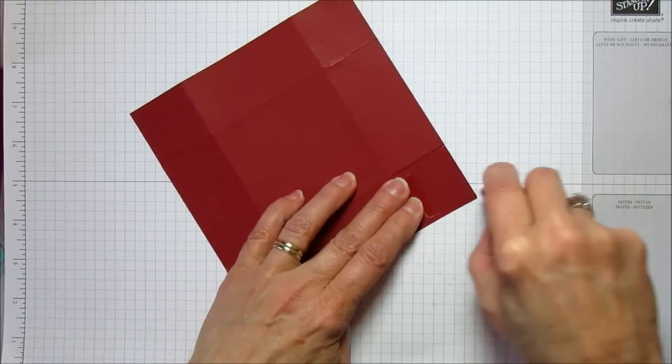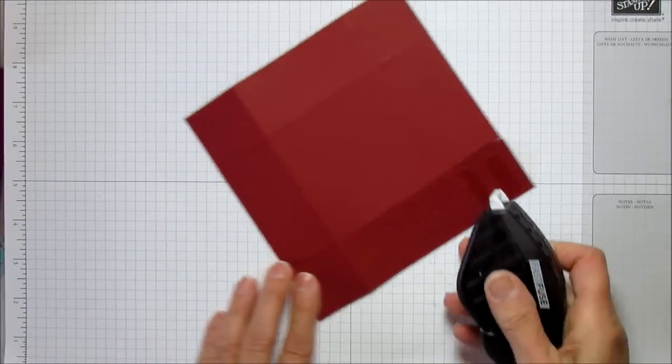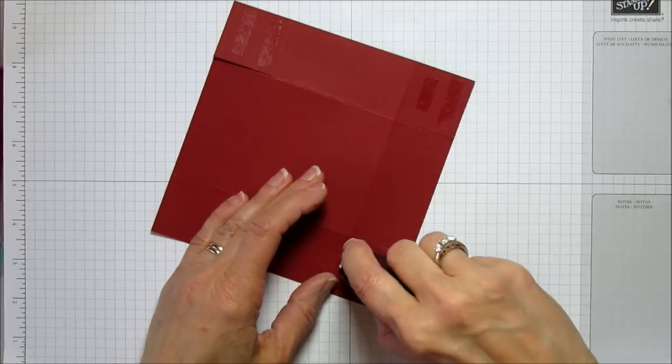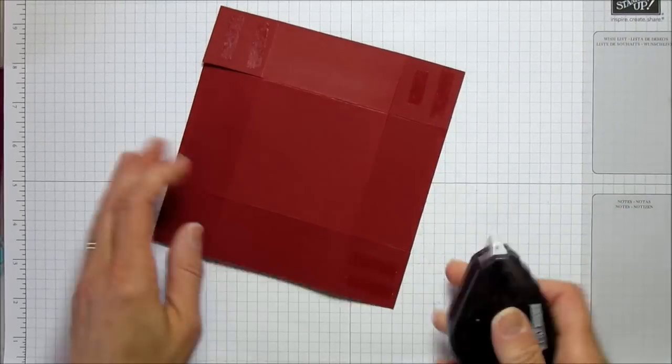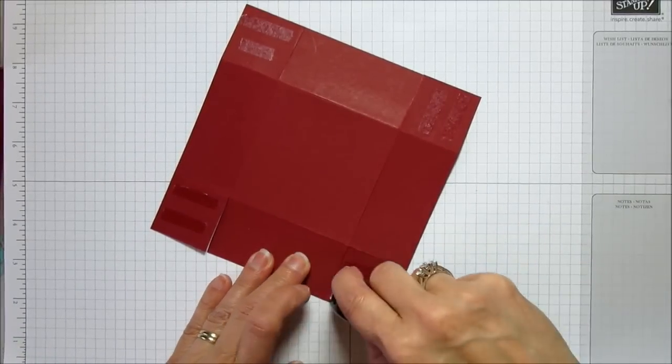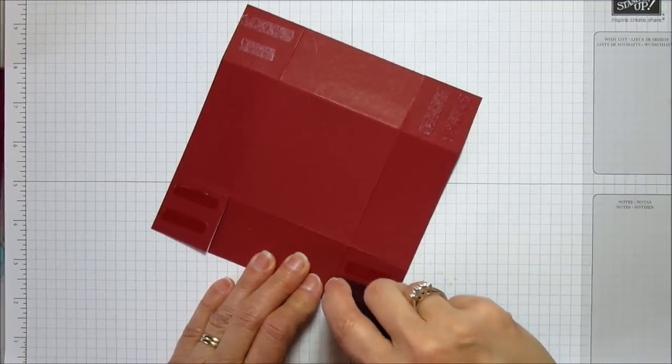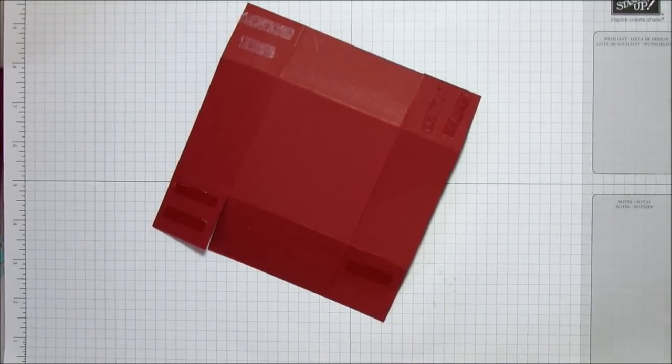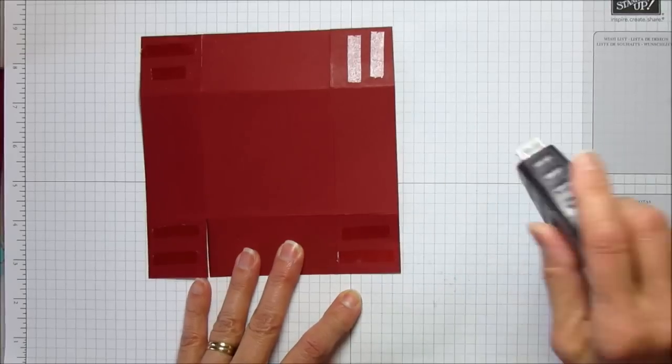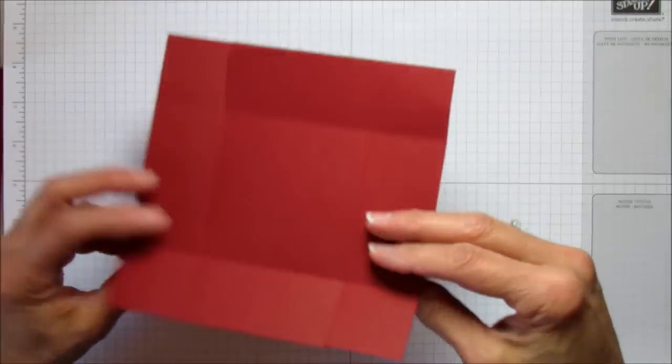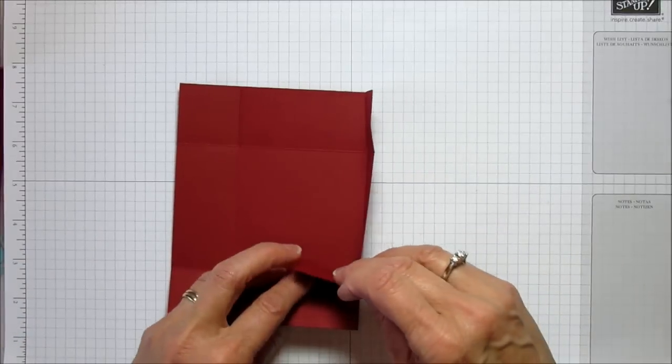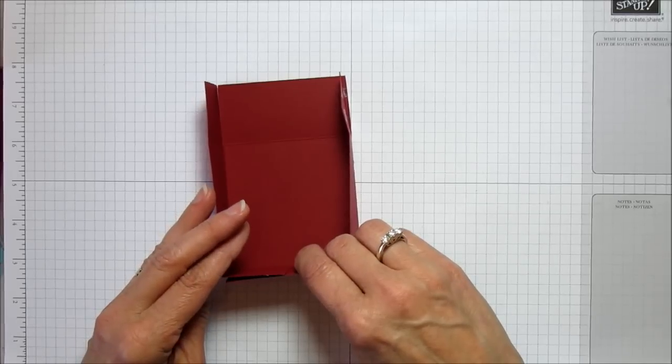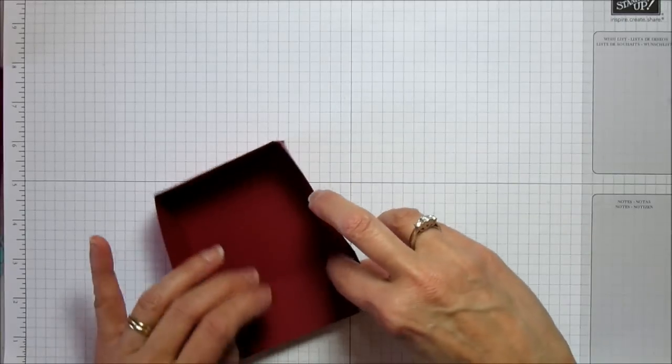I'm using fast fuse on this part of the box. For when we attach it to the box, you definitely want to use sticky strip so it stays all together. I do love this fast fuse. It's been taking me a little while to get used to it, but I love it - it holds everything.